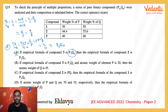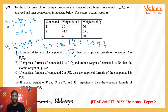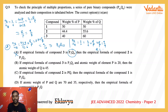Option B: if the empirical formula of compound 3 is P₃Q₂, and the atomic weight of element P is 20, then the atomic weight of Q is 45. The mole ratio of P to Q for compound 3 is 3/2, which equals (40/P) ÷ (60/Q) = (2/3) × (Q/P). This gives Q/P = 9/4. With atomic weight of P = 20, atomic weight of Q = (9/4) × 20 = 45. So option B is correct.